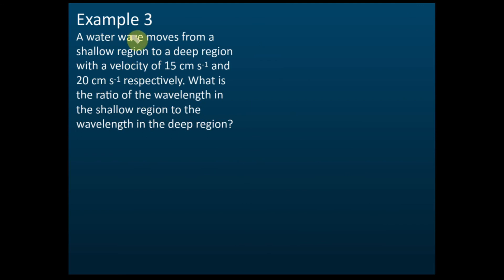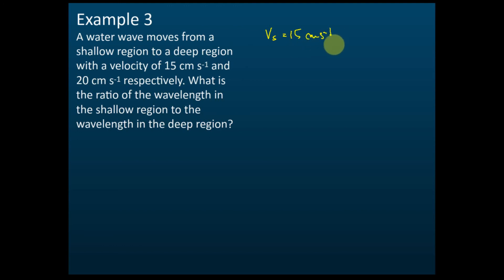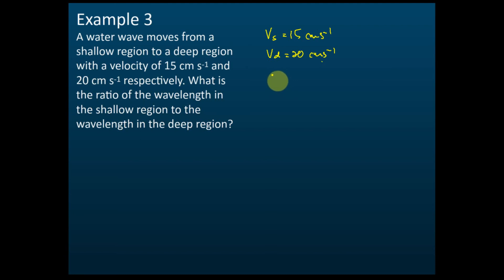Example 3: A water wave moves from a shallow region to a deep region with velocities of 15 cm/s and 20 cm/s respectively. Let's list the information. At the shallower region, vs equals 15 cm/s, and at the deeper region, vd equals 20 cm/s. What they want us to find is the ratio of wavelength in the shallower region to wavelength in the deeper region — lambda s to lambda d.